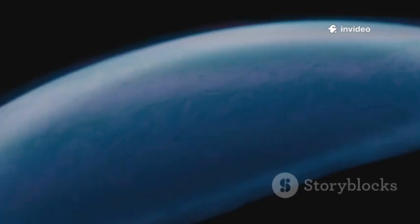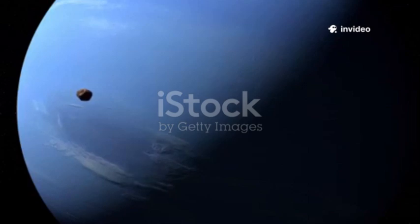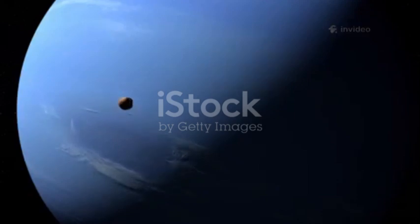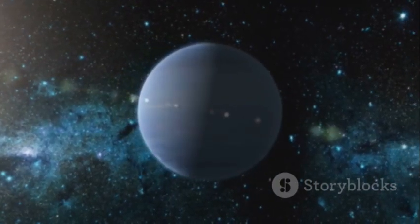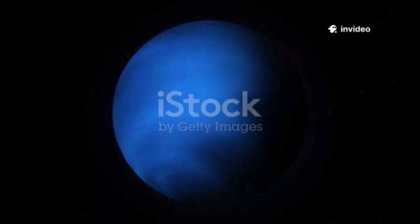Neptune's deep blue color is striking, a mesmerizing hue that immediately captures the imagination. It's a color that speaks of vastness and mystery, hinting at the hidden forces at play on this distant world. It's far richer and more vibrant than Uranus's pale, almost washed-out hue. The difference in color between these two ice giants is quite remarkable. Both planets have methane in their atmospheres, a gas that absorbs red light, giving them their bluish tint. This absorption is a fundamental aspect of their atmospheric composition. But Neptune's blue is significantly more intense, a deeper and more saturated shade.